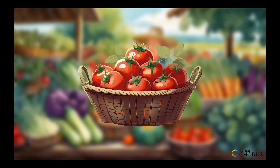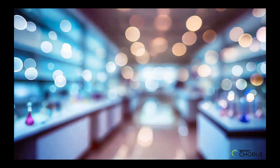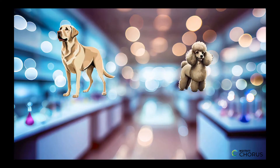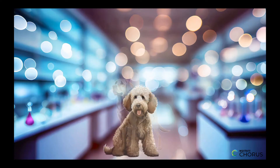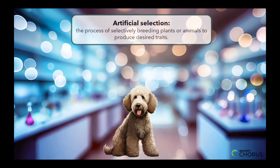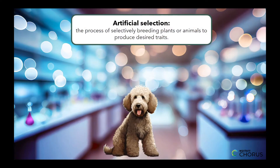But first, let's talk about what exactly is artificial selection. Artificial selection is the process of selectively breeding plants or animals to produce desired traits. In the case of plants, this involves cross-breeding two plants with desirable traits to create a new plant with those traits.